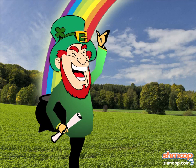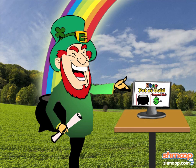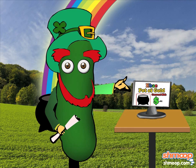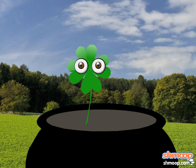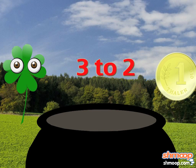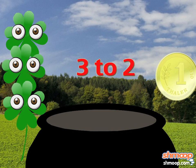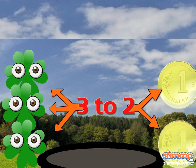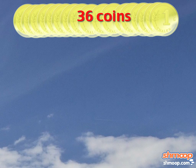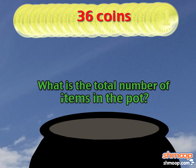Leonard the Leprechaun has run into some financial troubles and needs to sell his pot of gold on eBay. The pot contains shamrocks and golden coins. The ratio of shamrocks to coins is three to two, meaning that for every three shamrocks he has in his pot, he has two coins. If there are 36 coins, what is the total number of items in the pot?